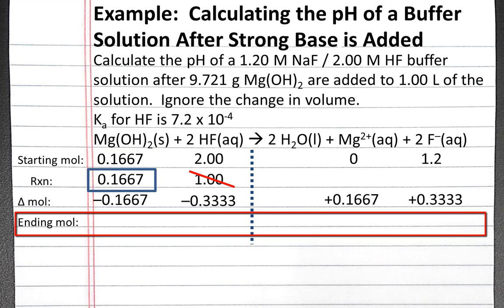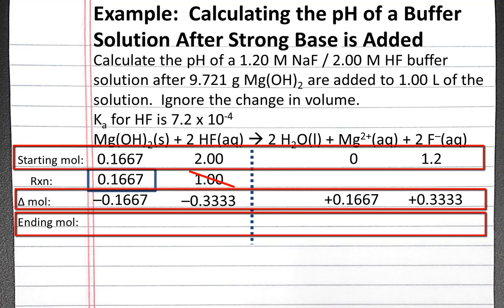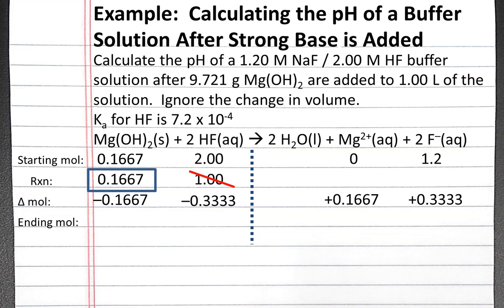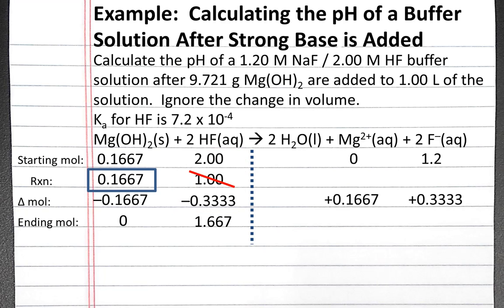To calculate the ending moles row, we add the starting moles row and the change in moles row. For magnesium hydroxide, 0.1667 minus 0.1667 equals 0 — we've used up all of the limiting reactant. For HF, 2 moles minus 0.3333 gives us 1.667 moles of HF. Likewise, we can fill in the ending moles for magnesium ions and fluoride ions.